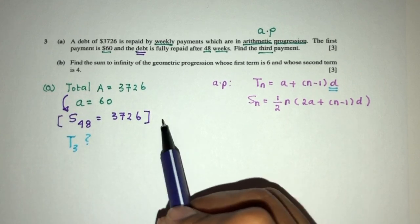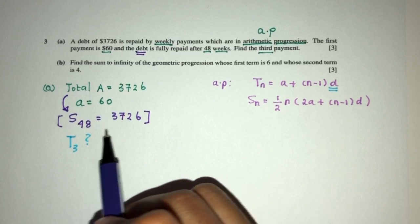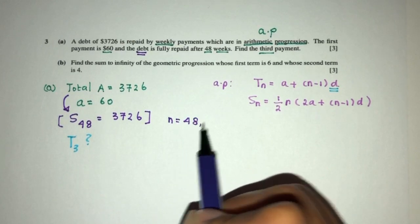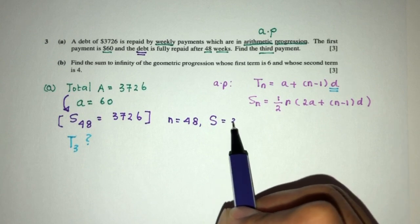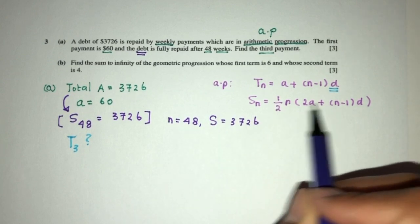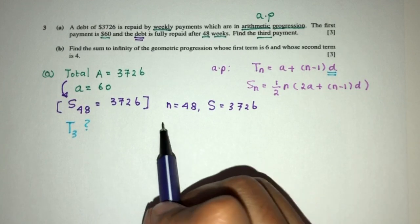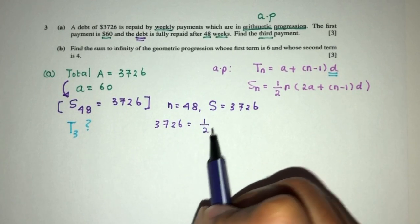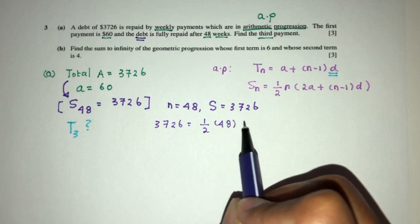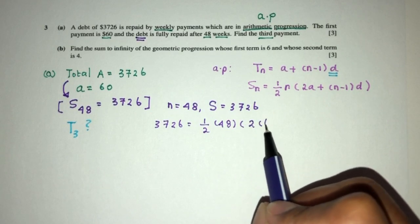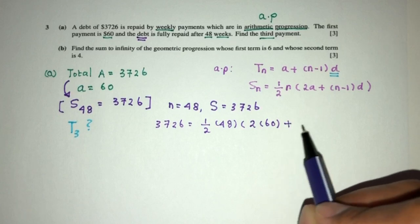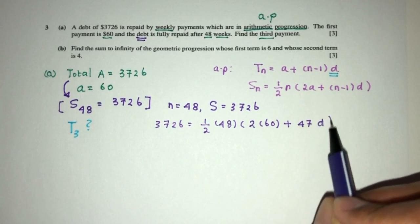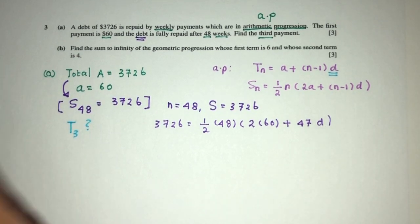So this means when N is equal to 48, the sum is equal to 3,726. Replace back in this formula, let's see what do you have. So you will have 3,726 is equal to half, N is 48, 2 times A, so A we know it is 60 given by the question, plus N is 48 minus 1 is 47 times D. So there's only one unknown. We have to find the value of D using this equation.